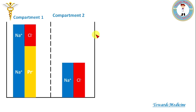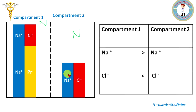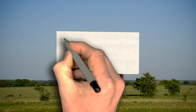You can see that sodium concentration in compartment 1 will increase to balance the negativity, and compartment 1 will again become electrically neutral, while compartment 2 will again become electrically neutral due to the decrease in concentration of sodium. So sodium in compartment 1 is in higher concentration compared to compartment 2, and chlorine in compartment 2 is in higher concentration than compartment 1. This is what is known as Donnan membrane equilibrium.